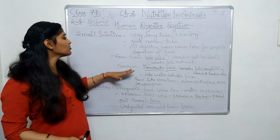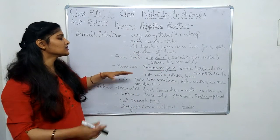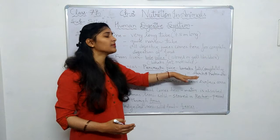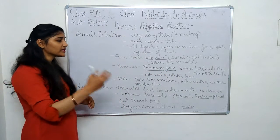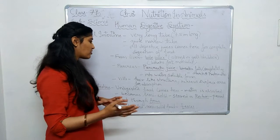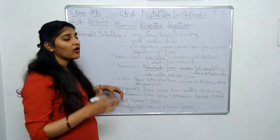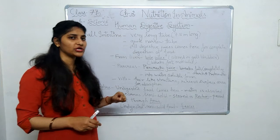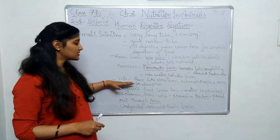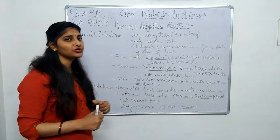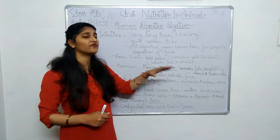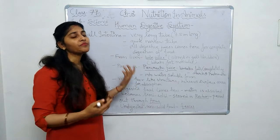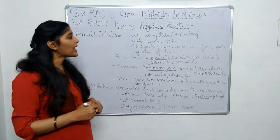In the small intestine, the food gets digested and converted into a water-soluble form, so it can now be absorbed. The small intestine has finger-like projections called villi, which help in the absorption of nutrients from this water-soluble form of food. The inner lining of the small intestine also absorbs nutrients.